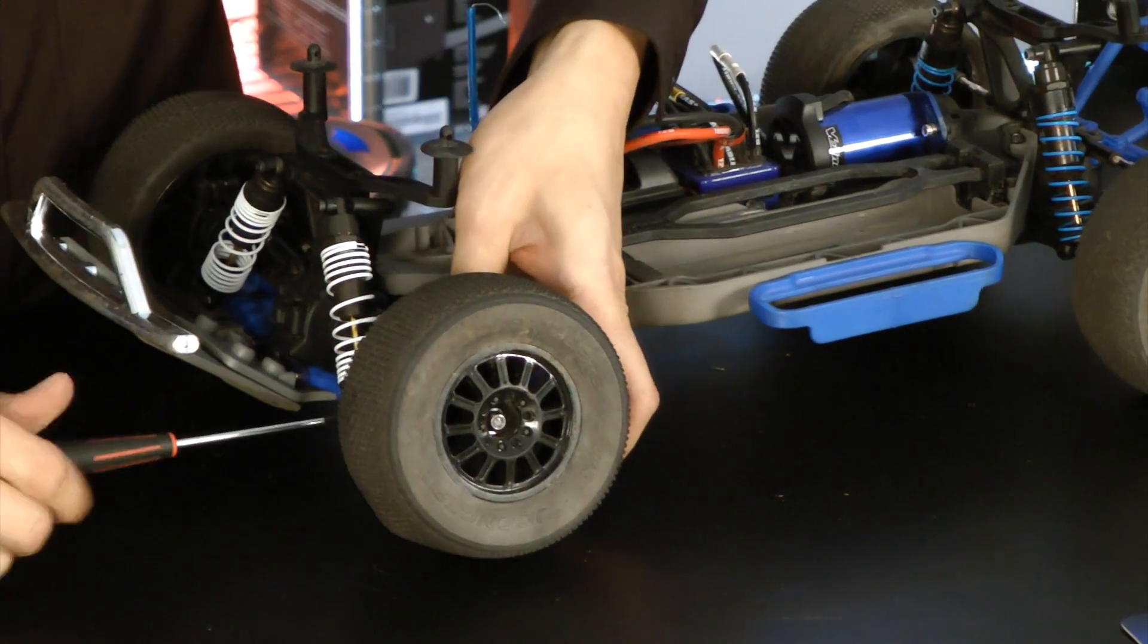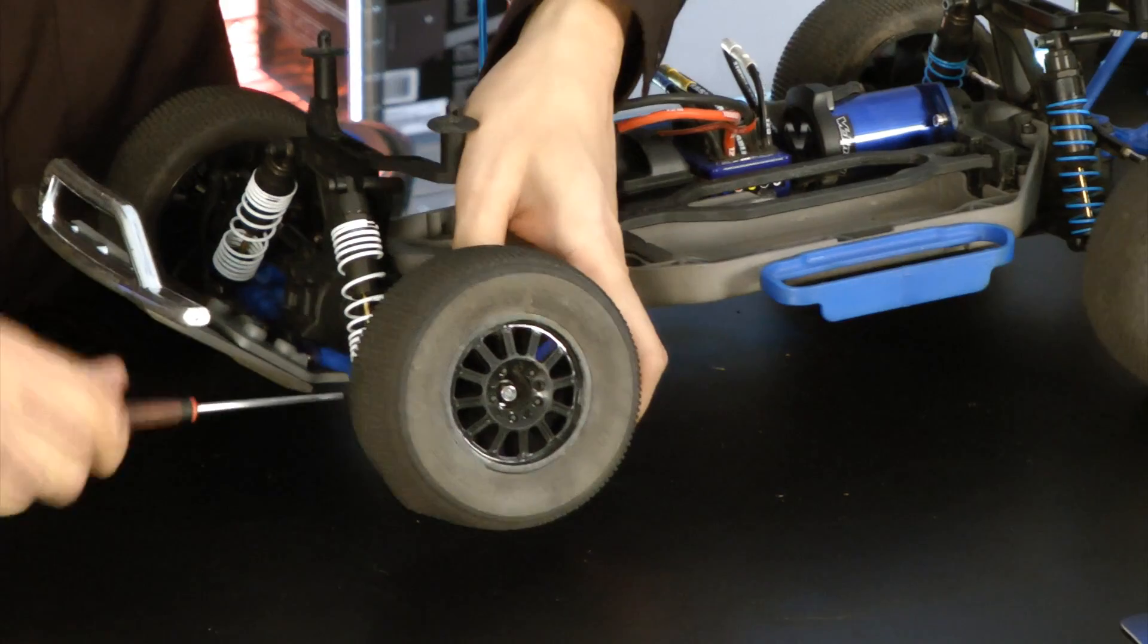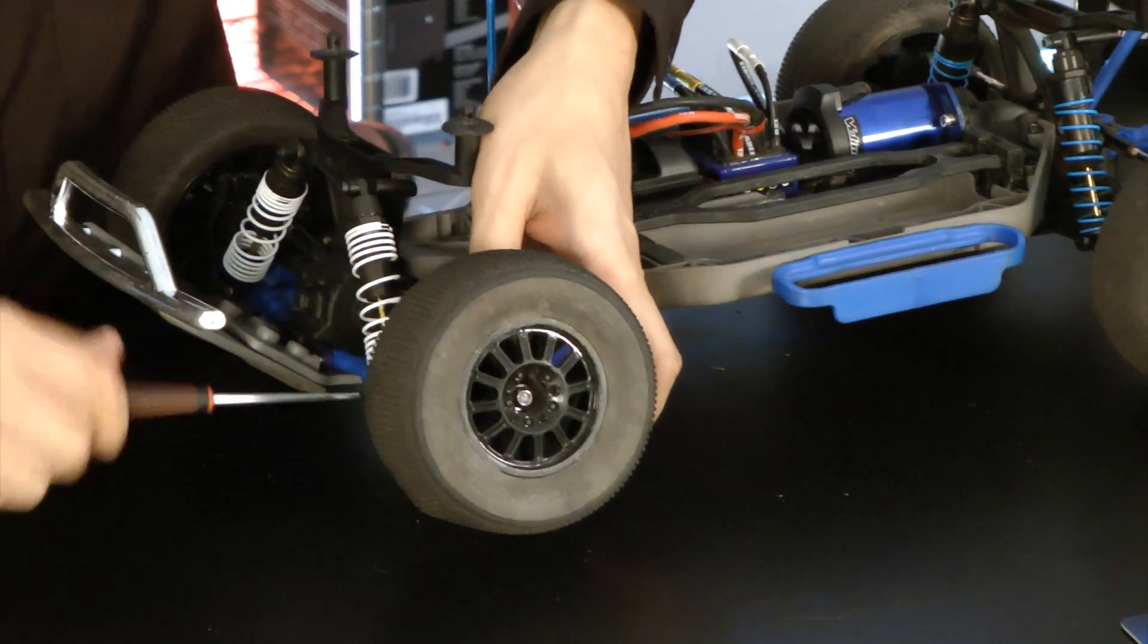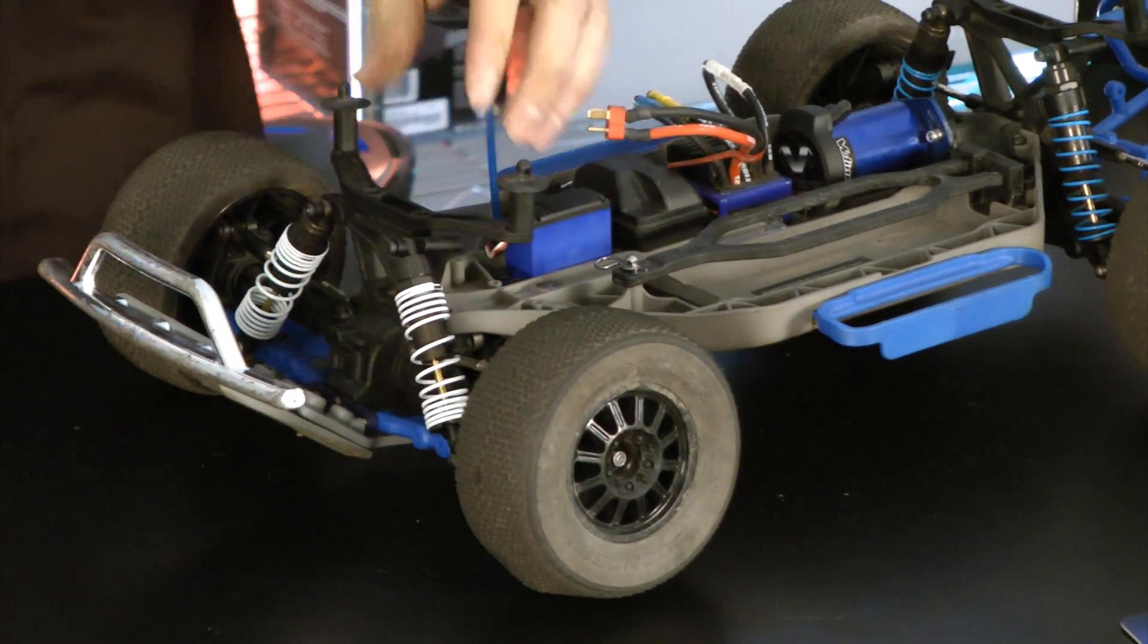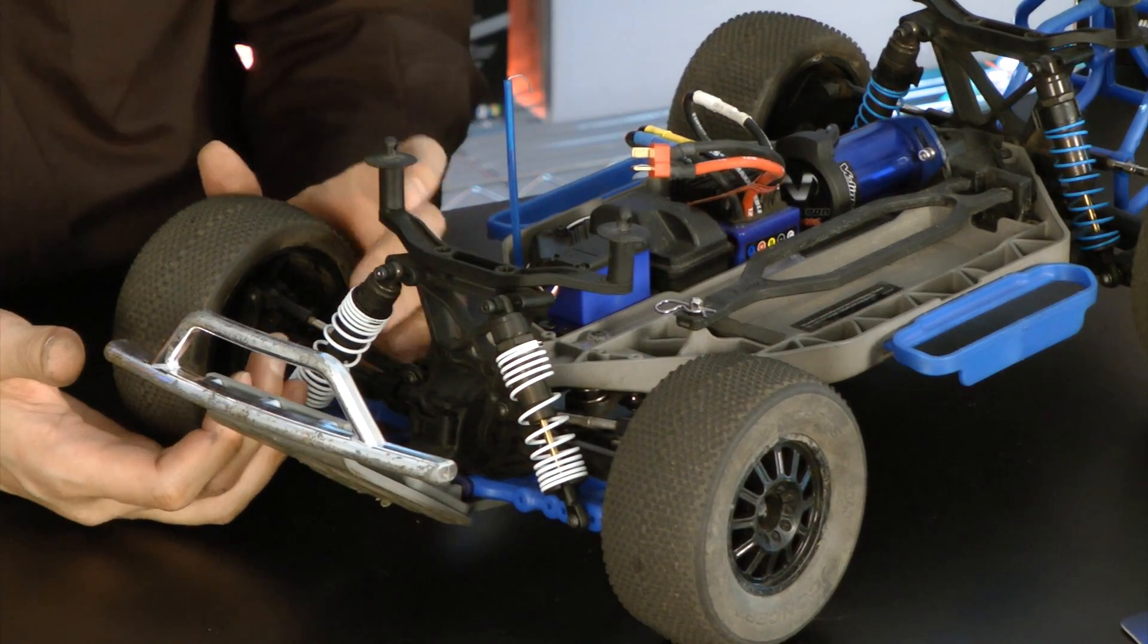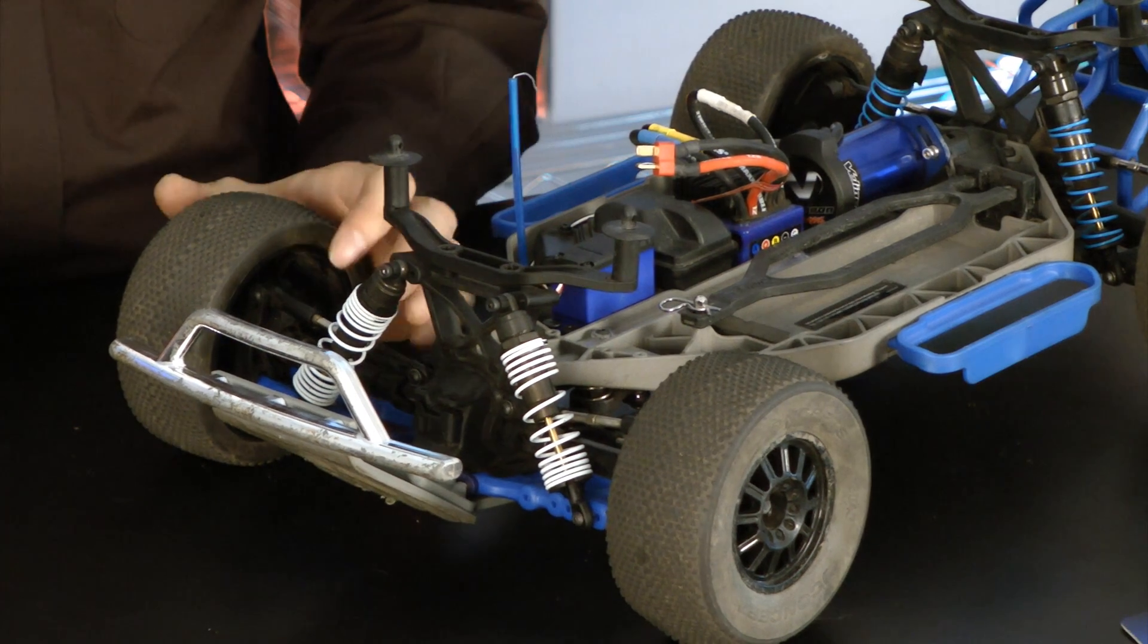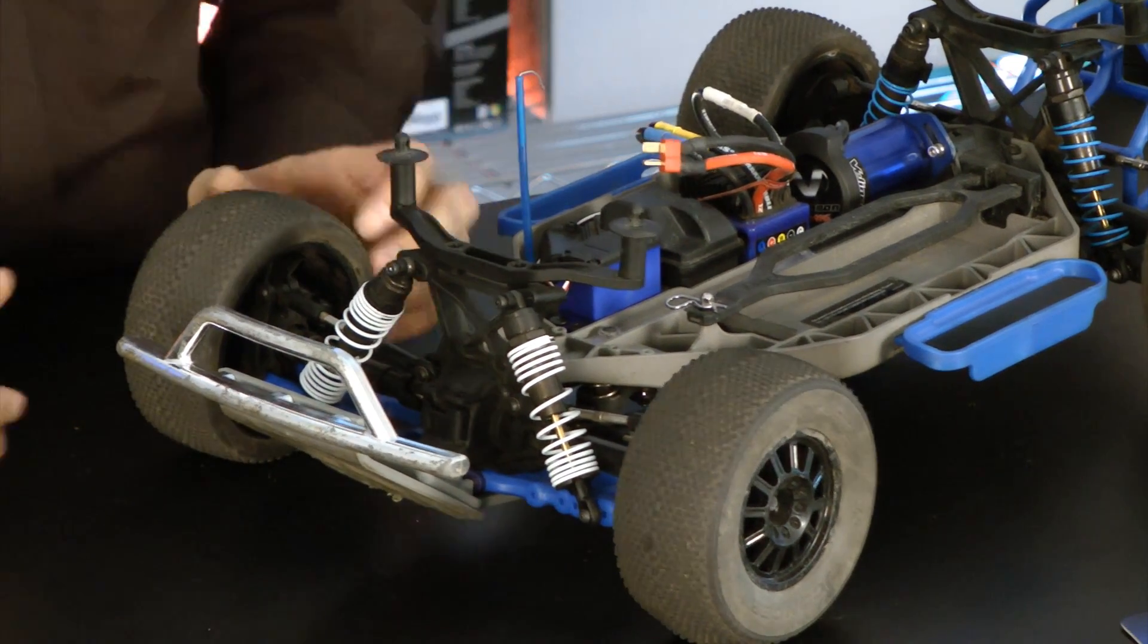If you're running on mostly flat terrain like the road or something, you can use a stiffer spring. Other things you can change are the shock oil and the dampers inside the shock.